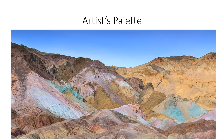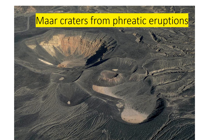The colors of the Artist Drive Formation are derived from volcanic ash and are best seen at Artist's Palette. The colors are a mixture of iron oxides and chloride compounds derived from the weathering of the volcanic ash. In Northern Death Valley, there's a cluster of unusual volcanic craters — the Ubehebe volcanic field, which consists of maar volcanoes.